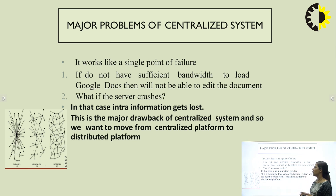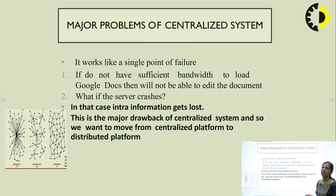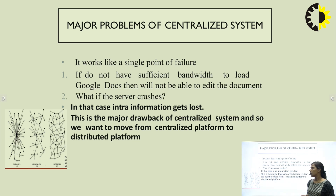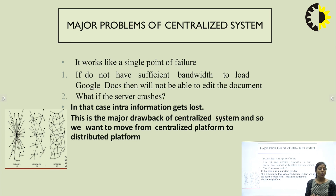Failure conditions include: if we do not have sufficient bandwidth, we cannot edit documents on Google Docs. The next problem is server crisis — if any problem comes in the centralized system and the server goes down, information can get lost. That is why we move to the decentralized platform, which is provided by blockchain.